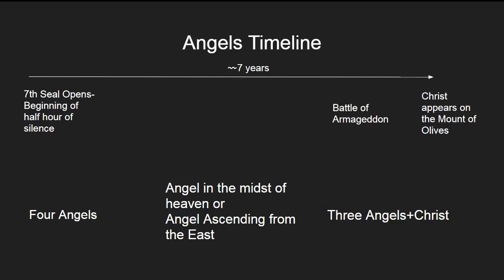The primary time we're looking at is between when the seventh seal opens and the half hour of silence begins, to the time when Christ appears on the Mount of Olives to the Jews. Within that we can see a clear delineation between groups of angels and individual angels that each perform their work in their time and place. We have four angels that carry out their destructions, then the angel in the midst of heaven, and then the three angels plus Christ.